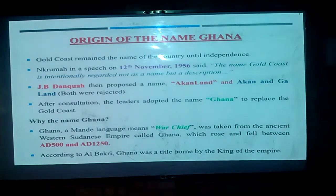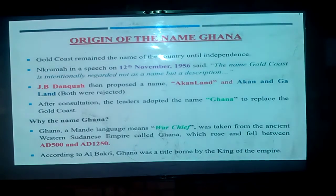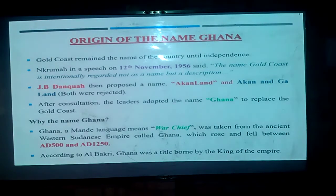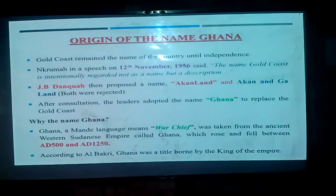The question is: where did the name Ghana come from? A lot of people have the funny idea that Ghana means 'God has appointed Nkrumah,' but that is not so. The name Ghana is actually a Mandi language — the Mandi people who live somewhere around the Mali and Senegal area. Ghana means 'warchief.' So the name Ghana belongs to the Mandi people, and it means warchief.